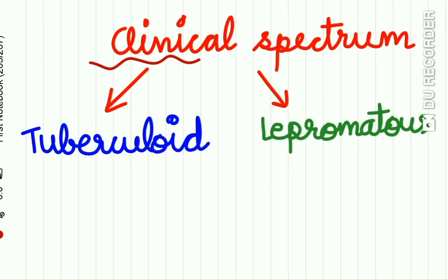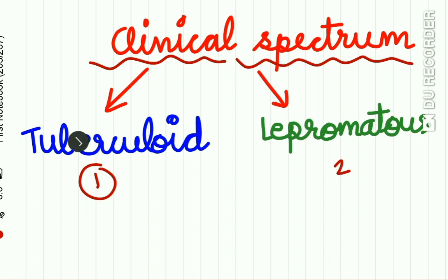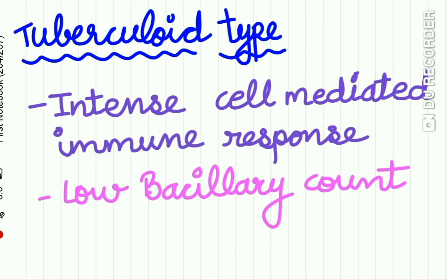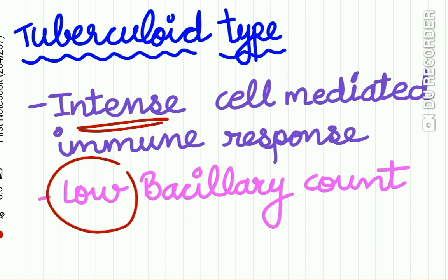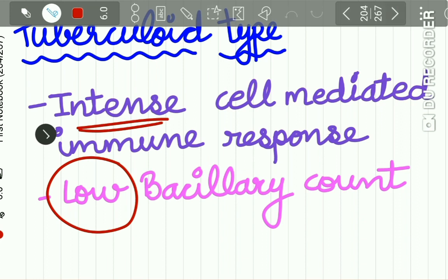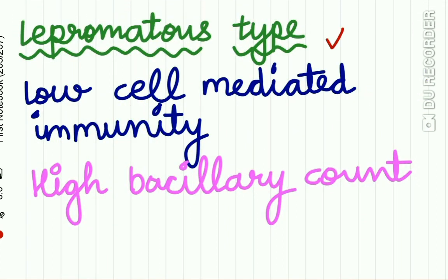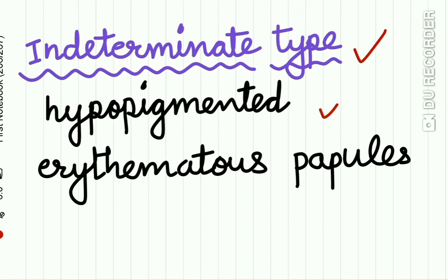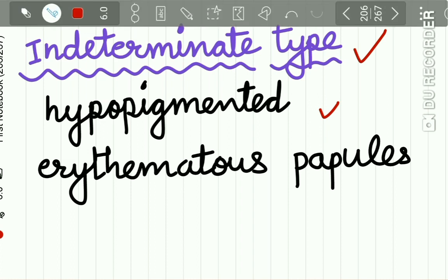Leprosy has a diverse clinical spectrum with two main types: tuberculoid leprosy and lepromatous leprosy, and an intermediate type as well. Tuberculoid leprosy has an intense cell-mediated immune response but a low bacillary count, while lepromatous leprosy has a low cell-mediated immune response but a very high bacillary count. The intermediate type shows hypopigmented erythematous papules on the skin.